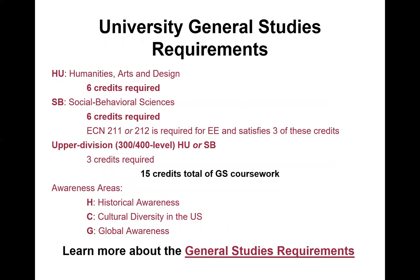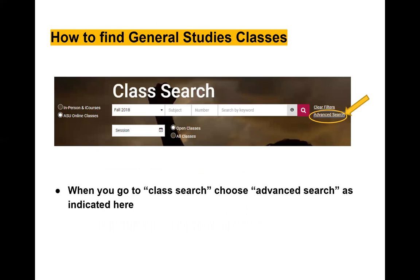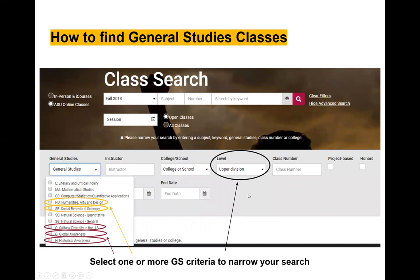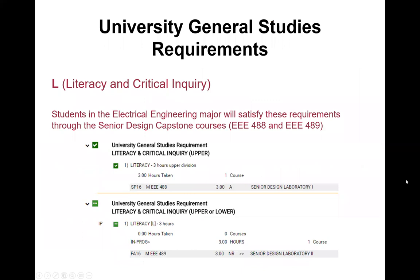The university general studies humanities and social behavioral studies requirement is 15 credits of required coursework, which you can review with your assigned advisor. To find those general studies classes in the class search engine, click on Advanced Search, then use the dropdown menu to select upper or lower division and check the boxes for humanities and social behavioral studies. The literacy and critical inquiry requirement will appear in red in your DARS until the end of your degree plan; all literacy, science, and math general studies requirements are satisfied by the major map — the only ones you need to select are humanities and social behavioral studies.